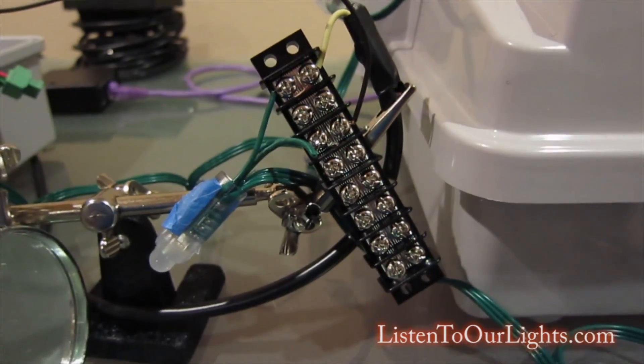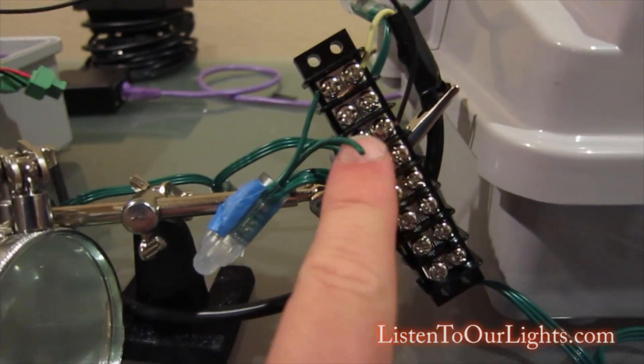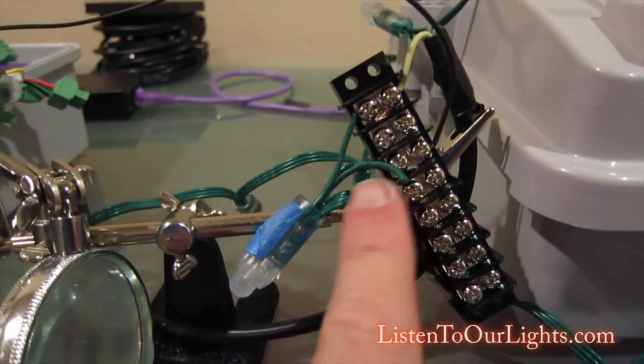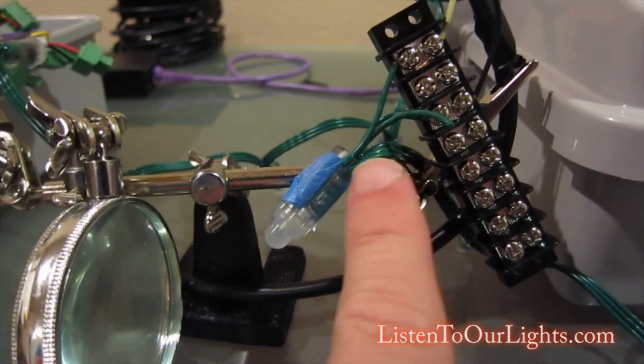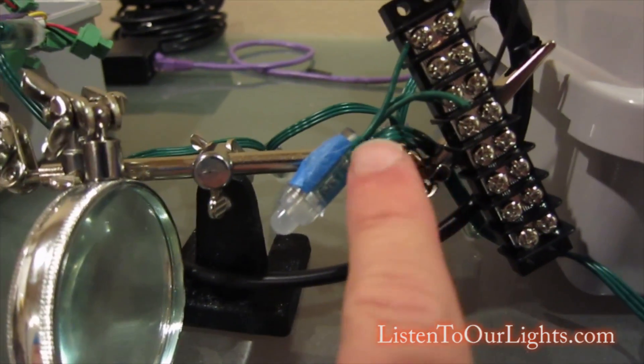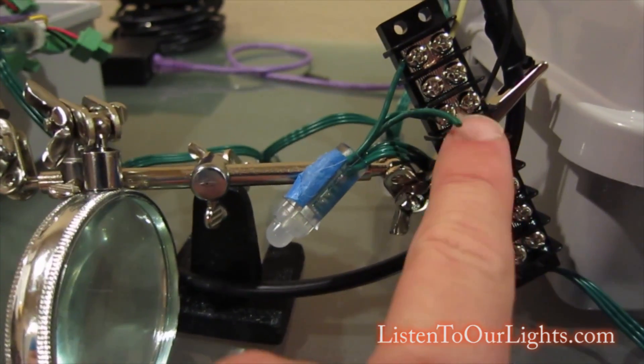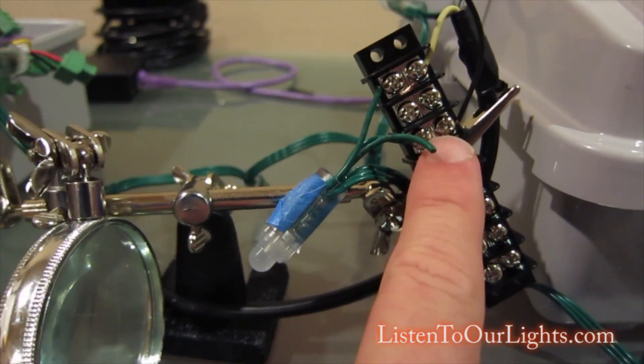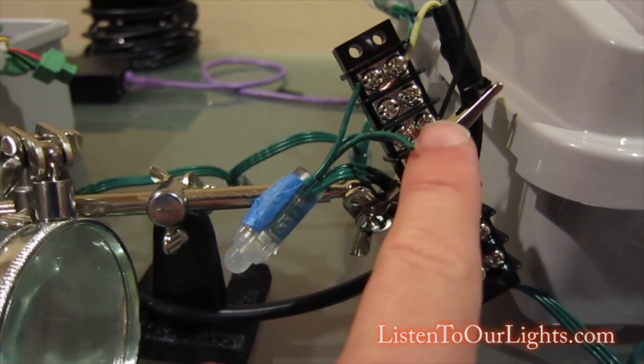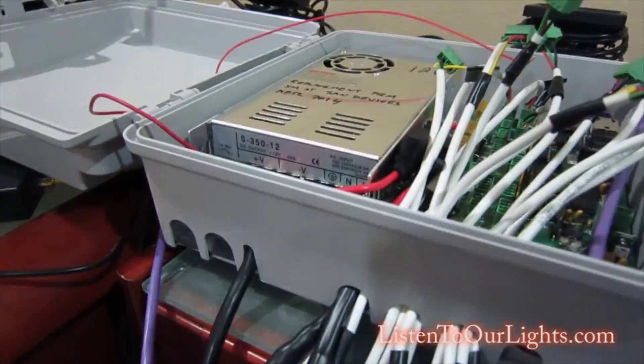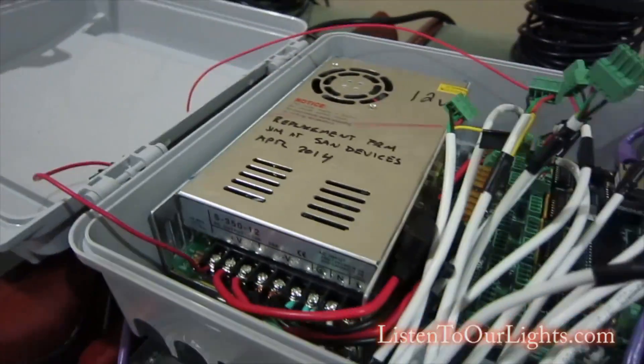So here's phase three of the experiment. So now, like before, I have the back end of the pixel string, 150 bulbs. This is the 150th bulb. Its 12-volt lead is connected into this terminal block, which goes to this wire, which leads back through the 18 feet of cable, back up there, into this terminal block, and back to the 12-volt power supply.